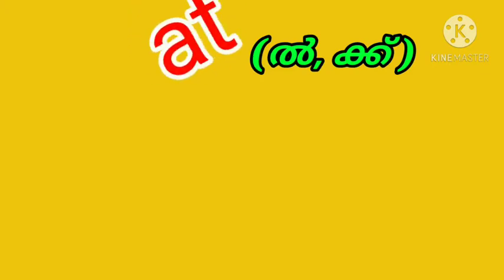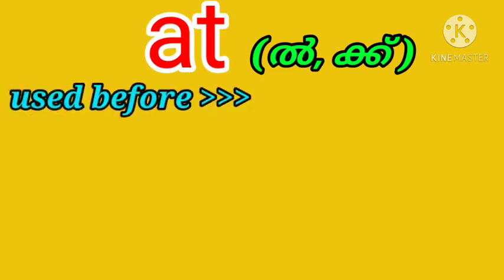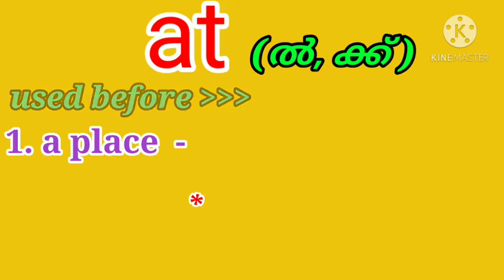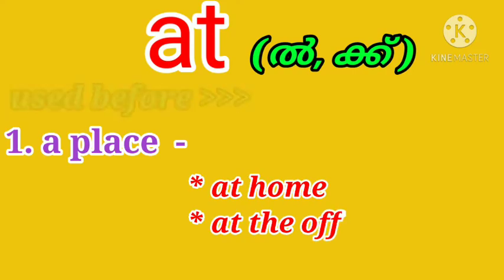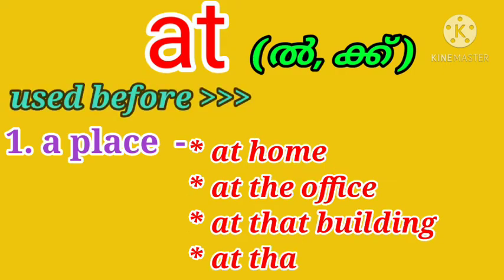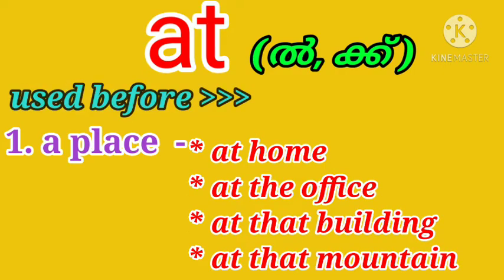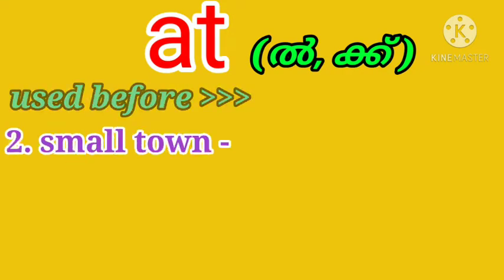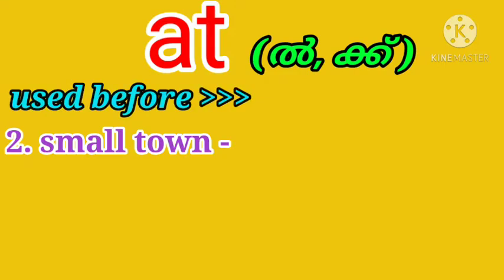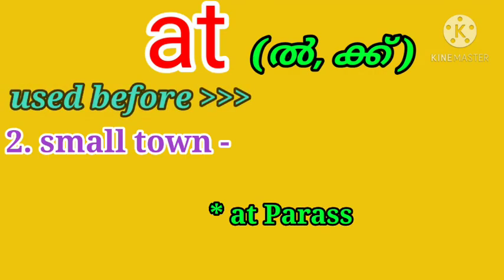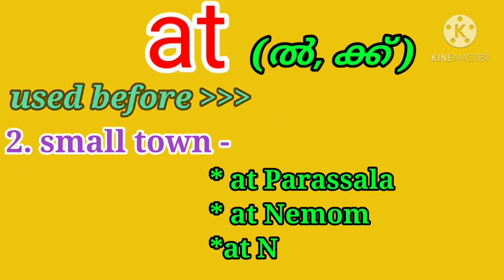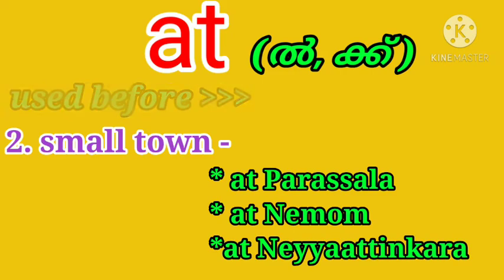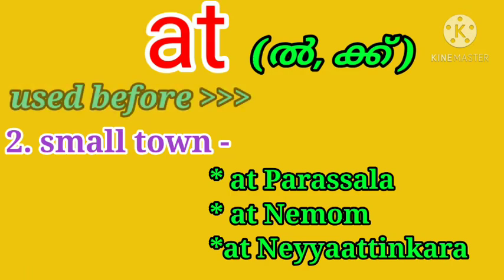The preposition 'at' is commonly used before a place. For example: at home, at the office, at that building, at mountain. So 'at' is commonly used before a small place. It is also used before a small town — for example, at Parashala, at Neymam, at Neyatingera.